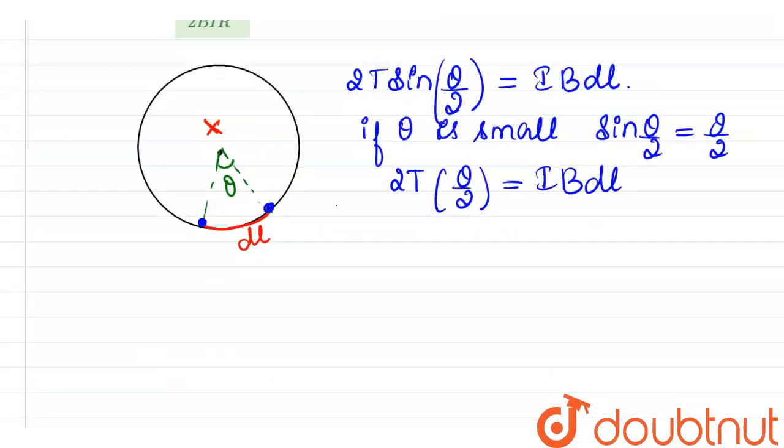T will now be equal to, the 2s cancel out, I B DL divided by theta.